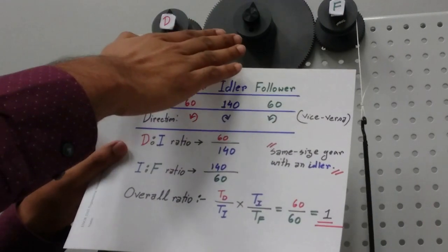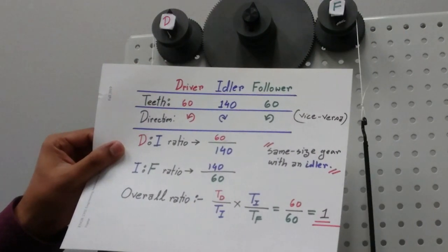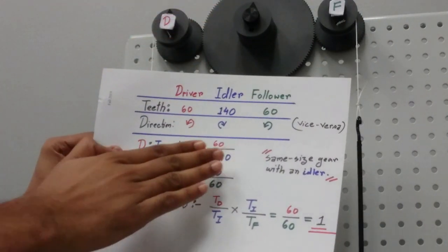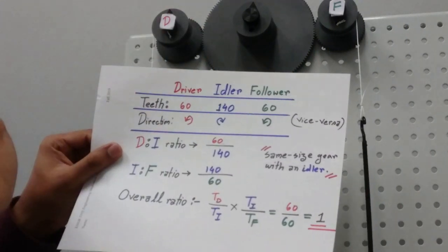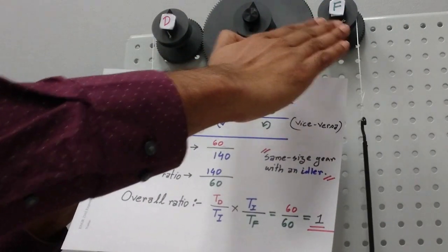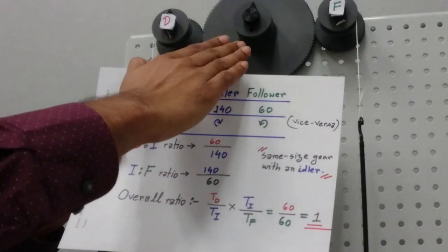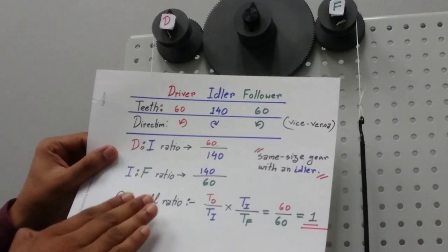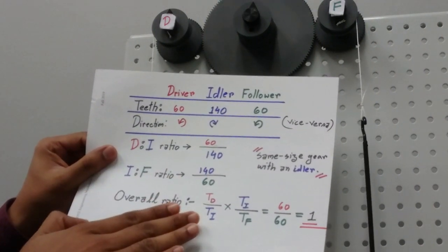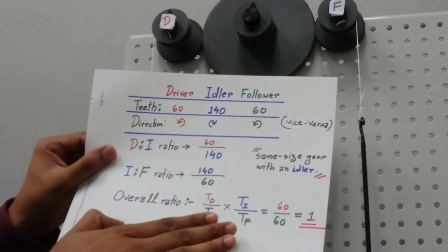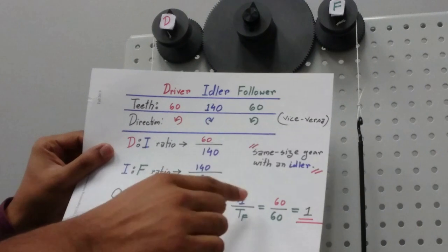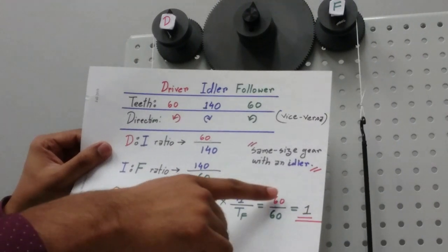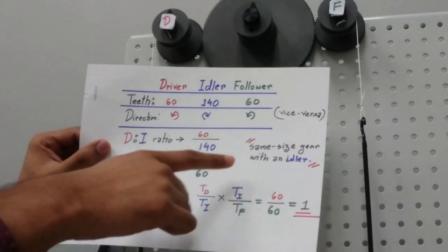To determine if the idler has any effect on the velocity ratio, we take the ratio from driver to idler — 60 teeth to 140 teeth. Then from idler to follower — 140 teeth to 60 teeth. The overall ratio is the product: (60/140) × (140/60). The teeth of the idler cancel out.